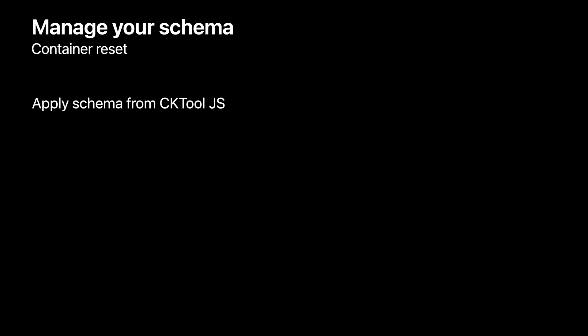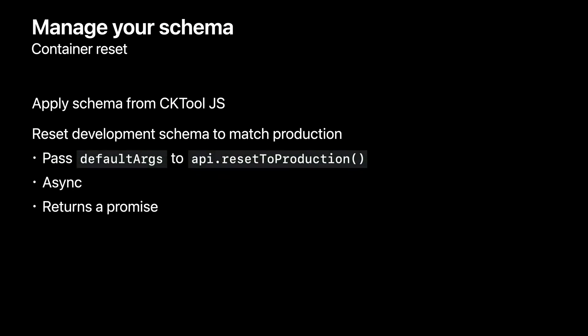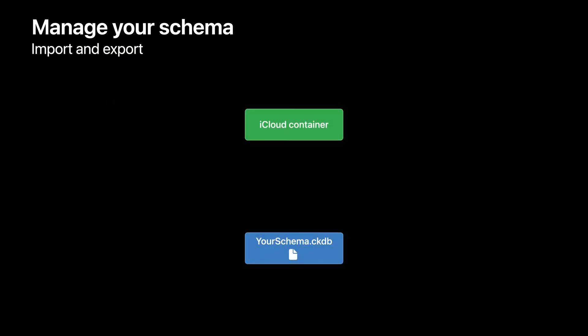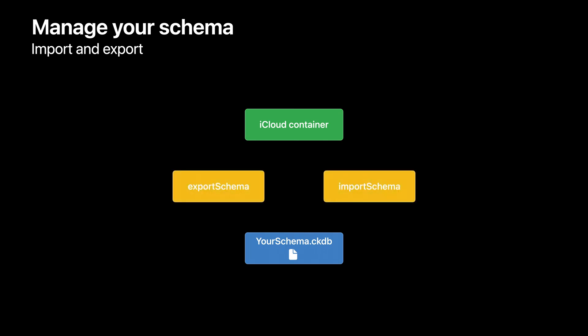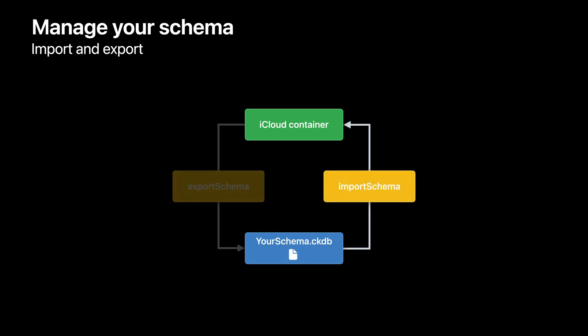The schema file you create for your container can be applied using cktool.js. Before you apply a new schema, you'll typically reset the container's development schema to match the one in production. You can do this with the resetToProduction method, calling it by passing the default args object declared earlier. If your schema isn't in production, all record types are deleted; otherwise, this will revert the development schema to the state of the production environment. Note that this is an asynchronous call, so this method returns a promise object. cktool.js has methods that let you export and import your container's schema — named from the perspective of the container. Together, these allow you to manage your schema's evolution.